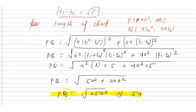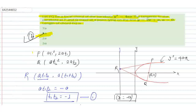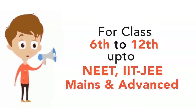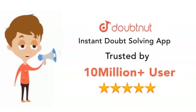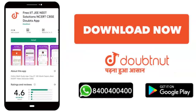So the length of the chord PQ = 5a. This is the right answer. Looking at the options, option B is the correct answer. Thank you.